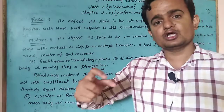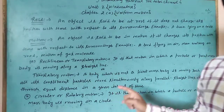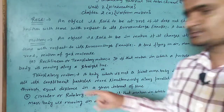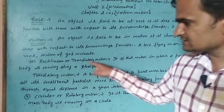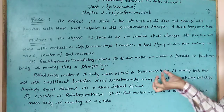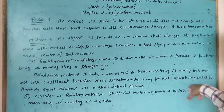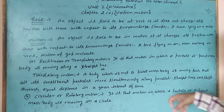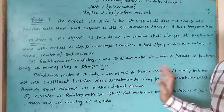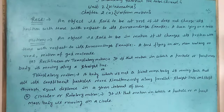Recap: rectilinear motion वो है जिसमें एक particle या point mass body straight line में move करे। Translatory motion में a body which is not a point mass body — उसके सारे constituent particles simultaneously parallel straight lines में move करते हैं और equal distance shift होते हैं in a given interval of time — is called translatory motion. Translatory motion uniform भी हो सकता है और non-uniform भी। Next: circular या rotatory motion.